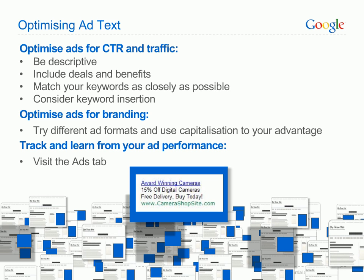Track and learn from your ad performance. Examine the data on the ads tab to identify low and high performing ad texts. For high performing ads, you can try testing a small variation of that ad with a different messaging or a different landing page to see if you can get even better results. If ads aren't performing well, you might consider deleting them or editing them to be more like your high performing ads. Remember, AdWords will normally automatically show the best performing ad within an ad group more often.